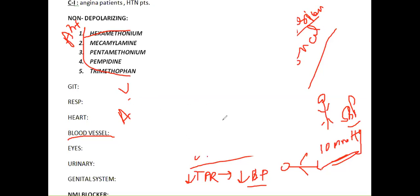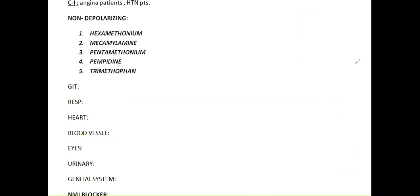The central vessels of the body will be dilating, decreasing total peripheral resistance - that is the blood exerting pressure on the walls of the arteries - so decreased peripheral resistance leads to decreased blood pressure, hypotension. But the hypotension will be orthostatic in nature. Orthostatic is an important word to remember.